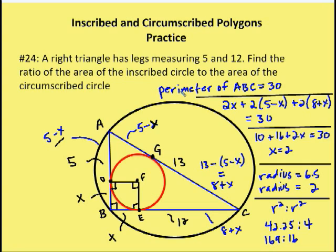The perimeter is 5 + 12 + 13 = 30. Setting the tangent segment expressions equal to the perimeter: (5 − X) + (5 − X) + (8 + X) + (8 + X) + 2X = 30. Simplifying: 10 + 16 + 2X = 30, so X = 2. Therefore the radius of the inscribed circle is 2.